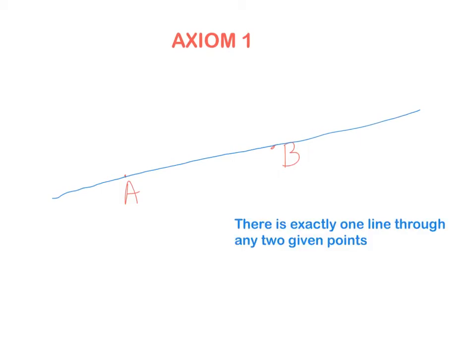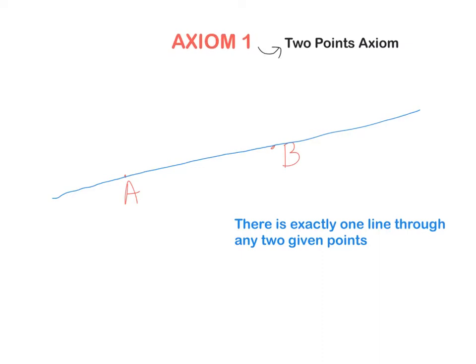That's why this axiom is also called the two points axiom — we can draw only one line through two given points. Make sure you have the axiom in your copy along with the drawings, and learn them off by heart.